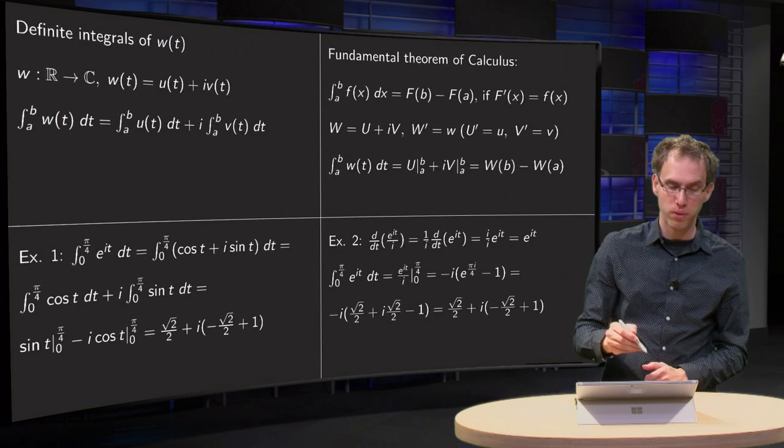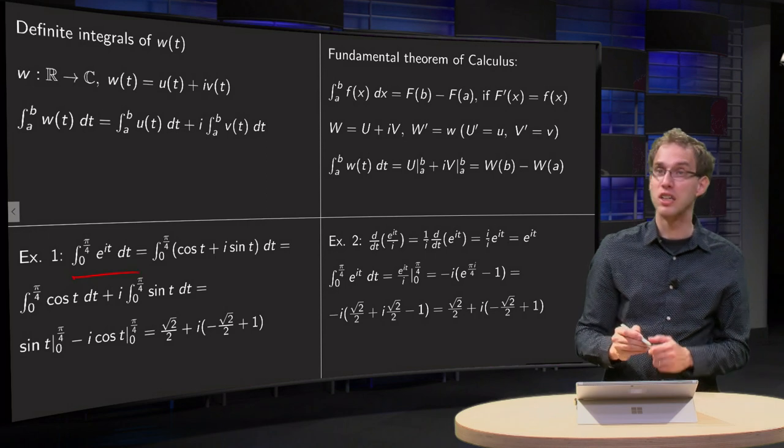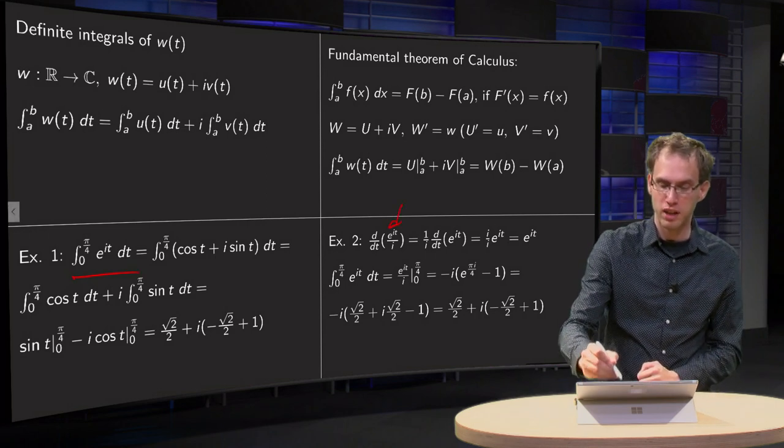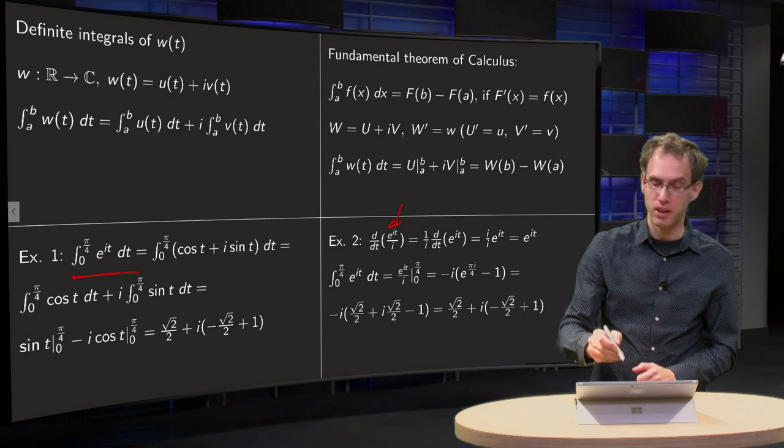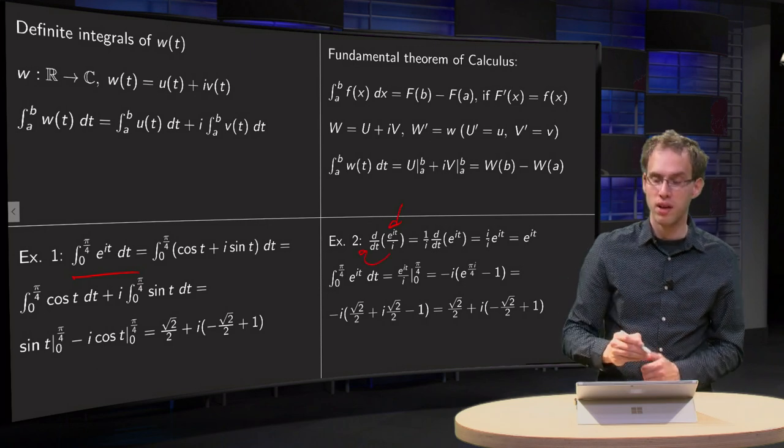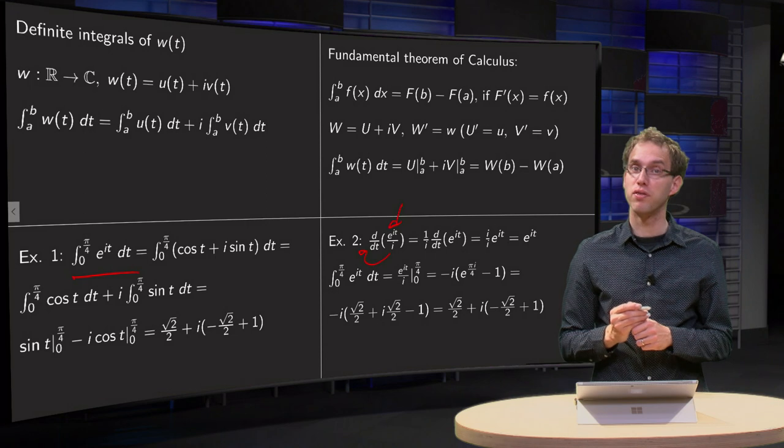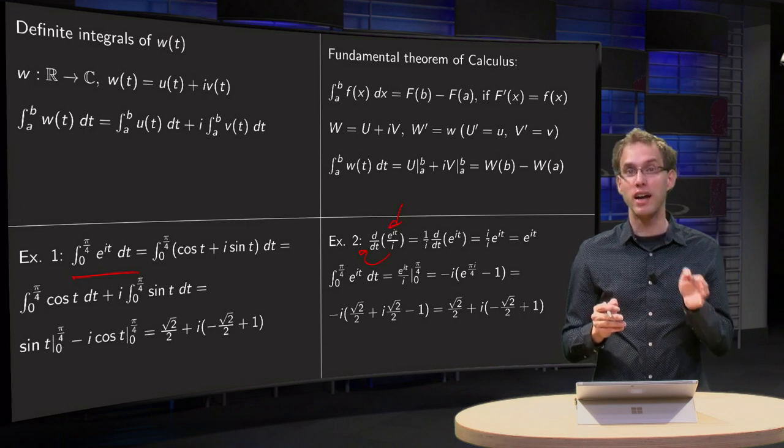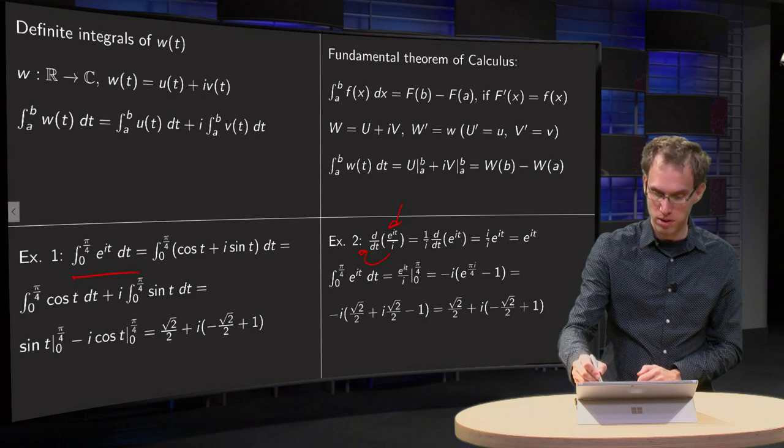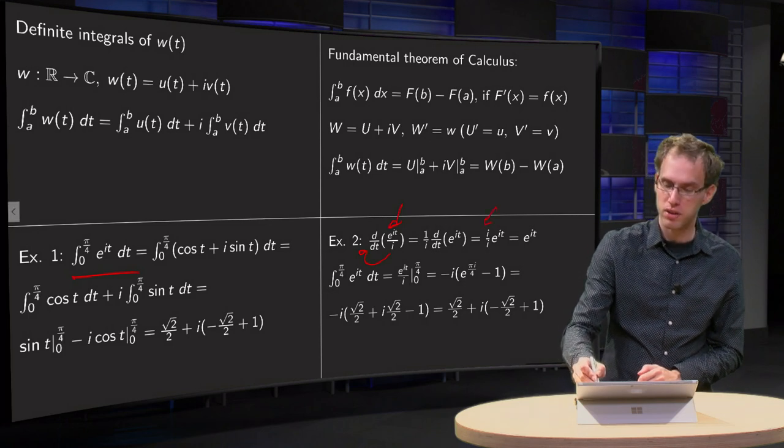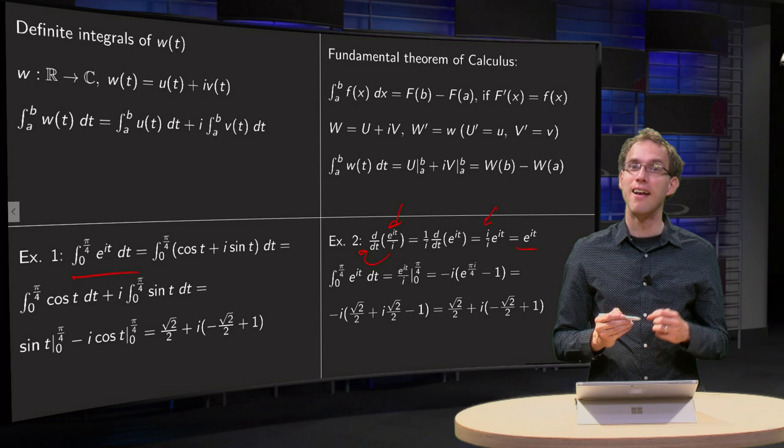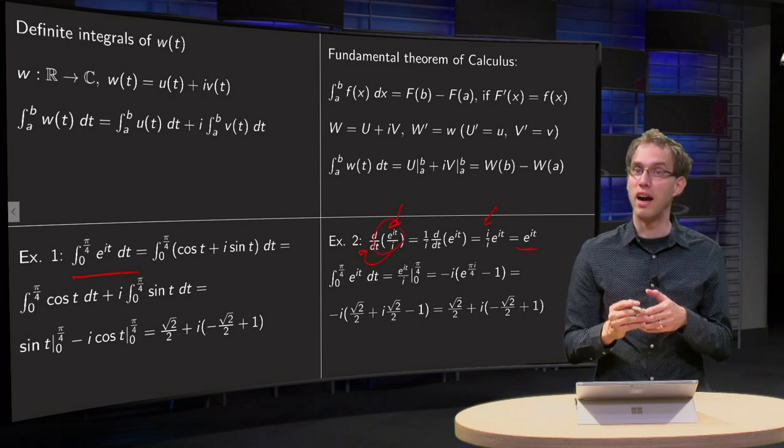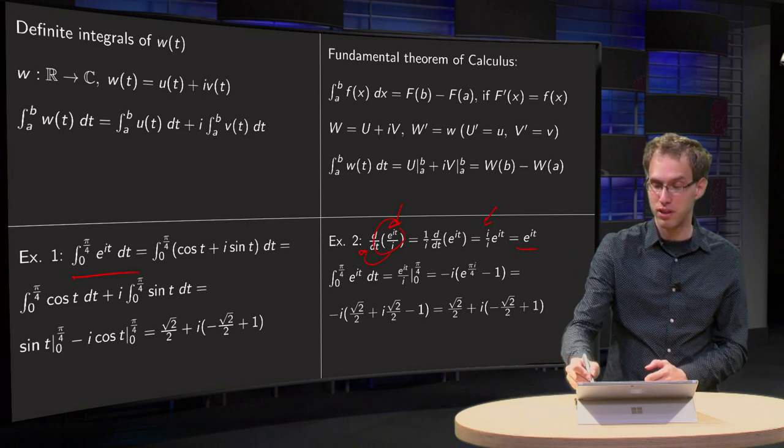Well in the example, in the case of example one, this is actually doable because we know that if we differentiate e to the power it over i, we can take the constant in front, and then you have the derivative of e to the power it. We have seen that in the previous example that it yields i times e to the power it, so we get an additional factor of i which equals e to the power it. So you see that this function over here, e to the power it over i, is the antiderivative of e to the power it.